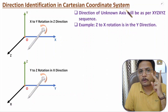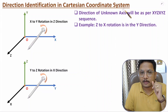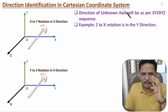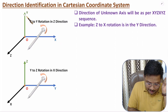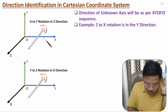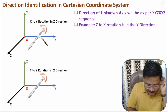Sometimes you will be given with two different axes, and from those two axes you may need to find the direction of the third axis. So how to identify it? For example, if you have been given axis X and axis Y, you need to rotate a screw from X to Y. If you rotate the screw from X to Y, it will be moving in the Z direction — so this axis is the Z axis.